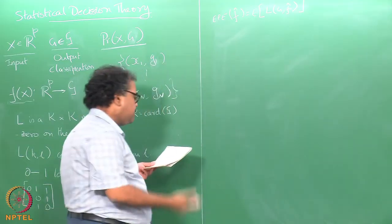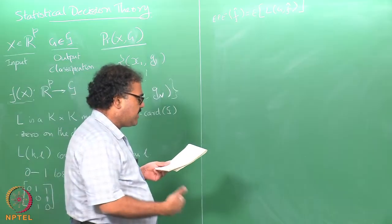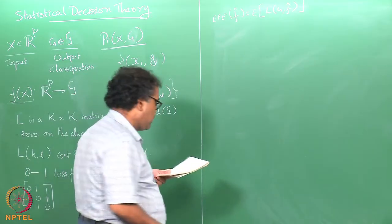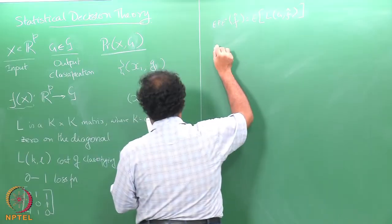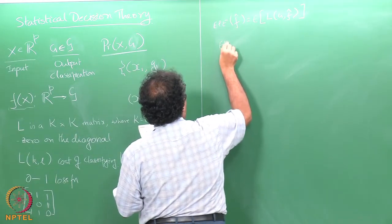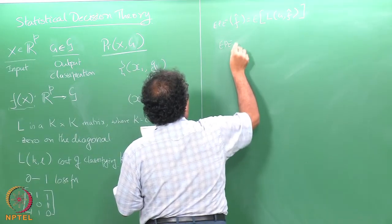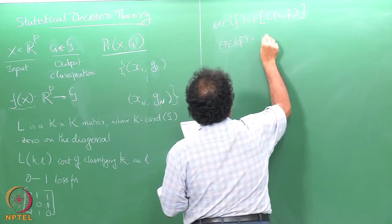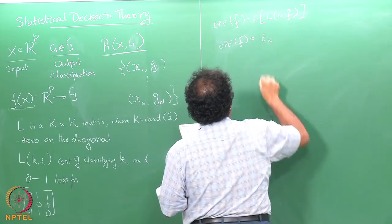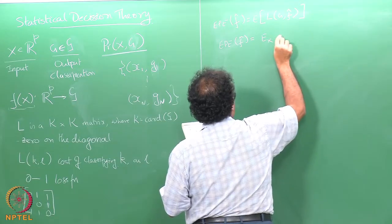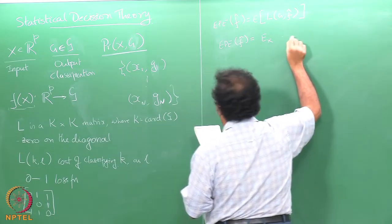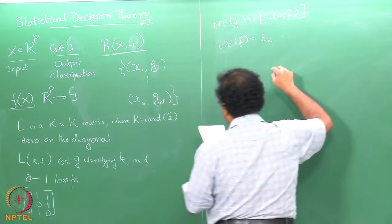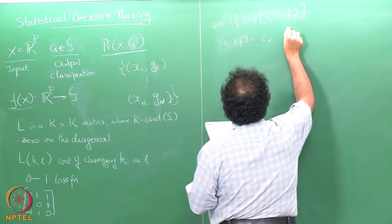What we are going to look at is the expected prediction error of a function f. We can do the same thing that we did earlier — I can start conditioning on x. So the expected prediction error becomes an expectation of G over G given x.